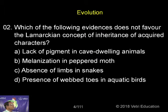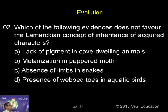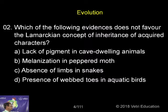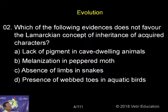Which of the following evidences does not favour the Lamarckian concept of inheritance of acquired characters? The Lamarckian concept is called inheritance of acquired characters. He wrote in his book called Philosophie Zoologique. One of the propositions he used in the inheritance of acquired characters is the use and disuse concept.